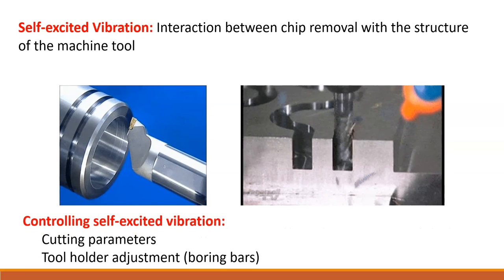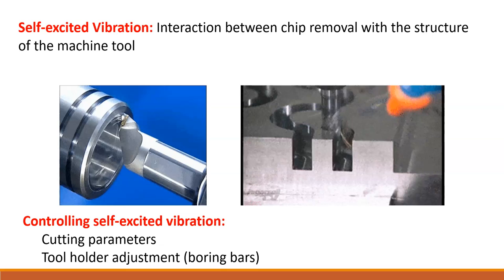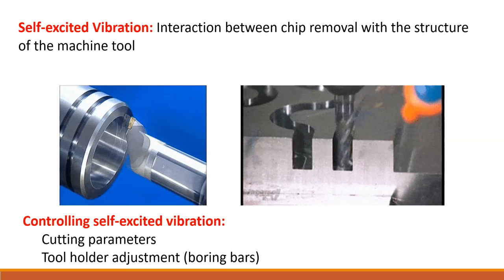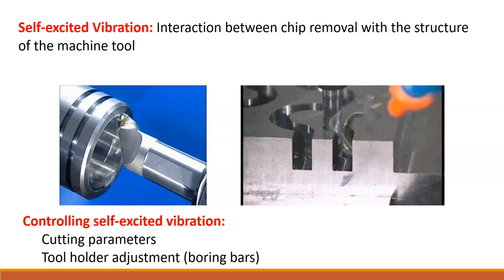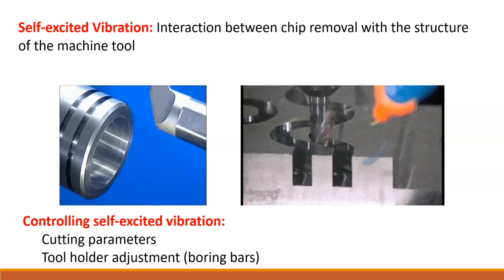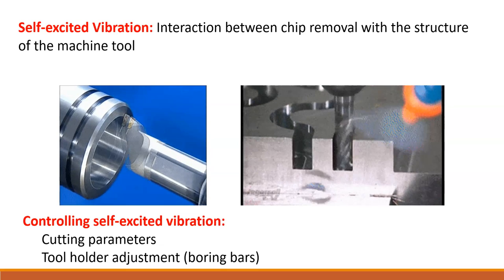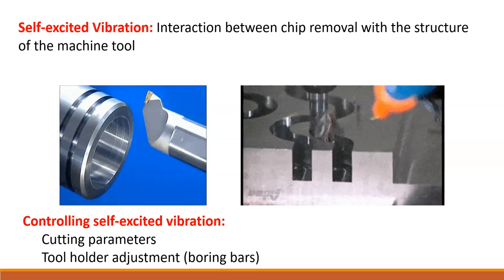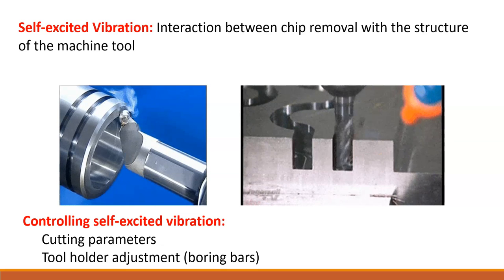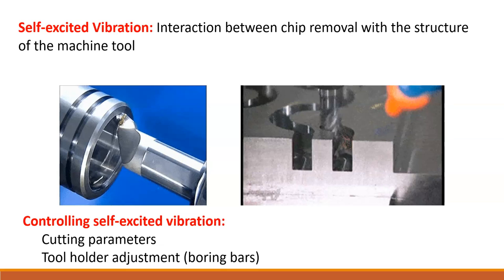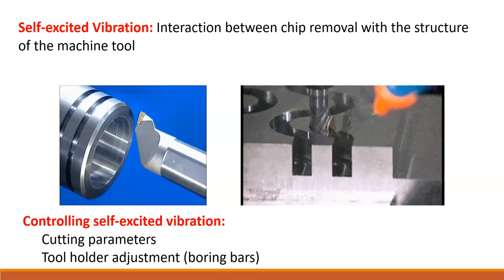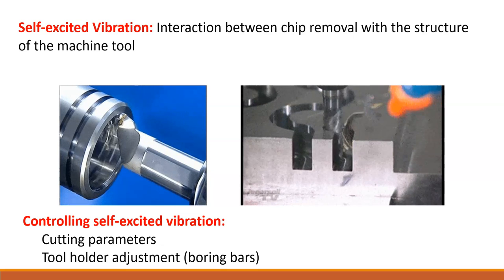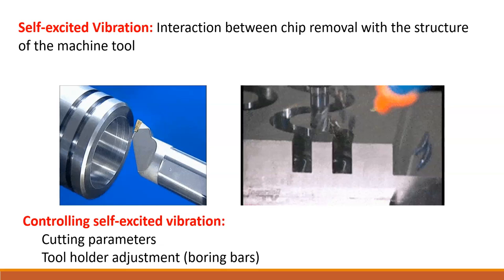The way to address self-excited vibration is first through cutting parameters — speeds, feeds, and depth of cut. That addresses regenerative chatter, cutting too fast or too slow, as well as different types of harmonics you might create within the machine tool. Another approach is tool holder adjustment — looking at different types of boring bar setups and how deep and how long a cutting tool you have in your engagement.